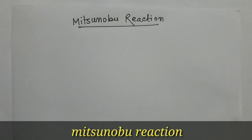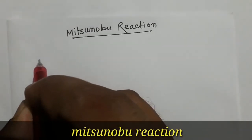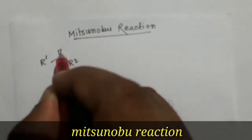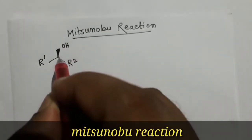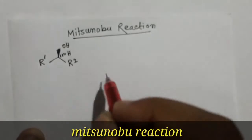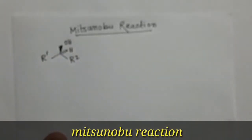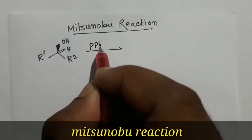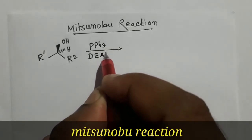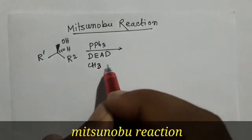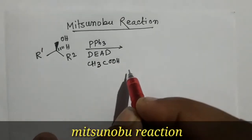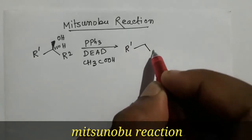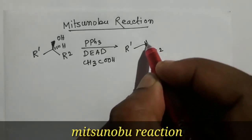Take an example. Consider an alcohol molecule with substituents R1 and R2, where the OH group is above the plane and hydrogen is below the plane. This substrate is treated with triphenylphosphine and diethylazodicarboxylate with acetic acid. We will get an ester product with inverted configuration.